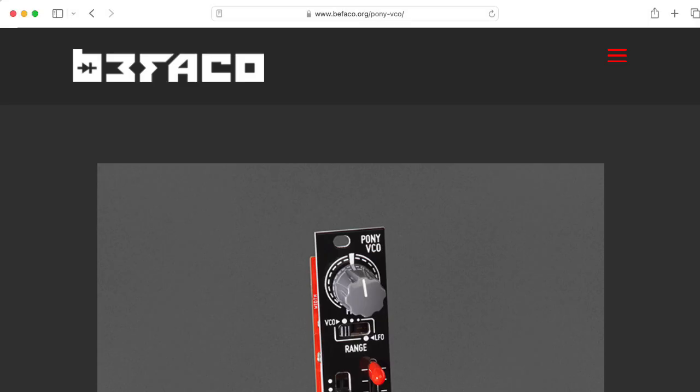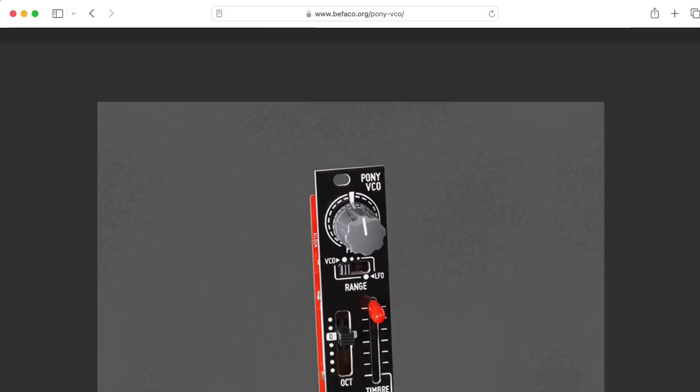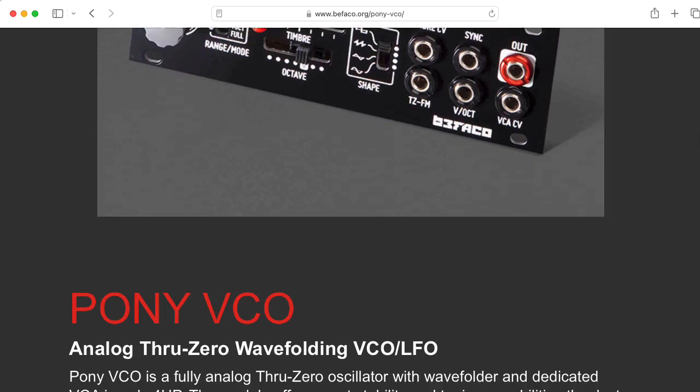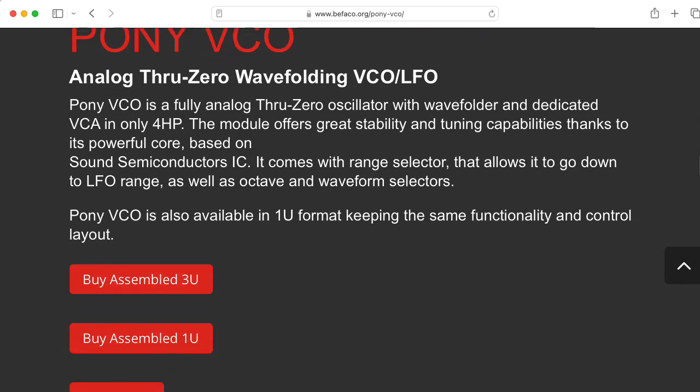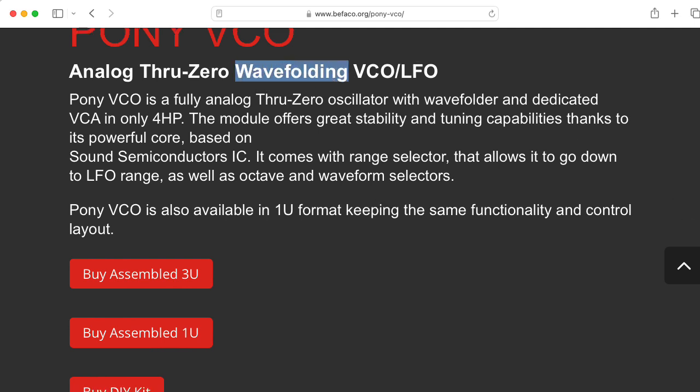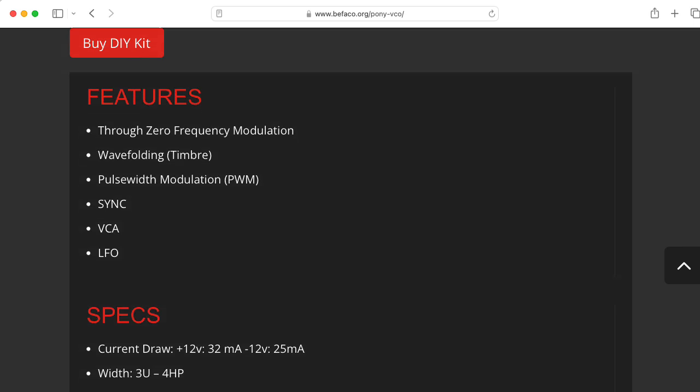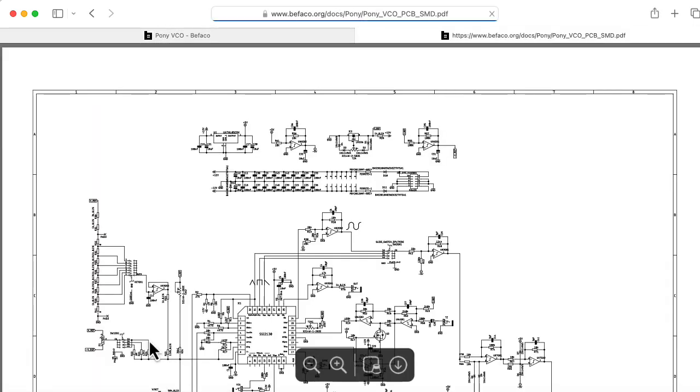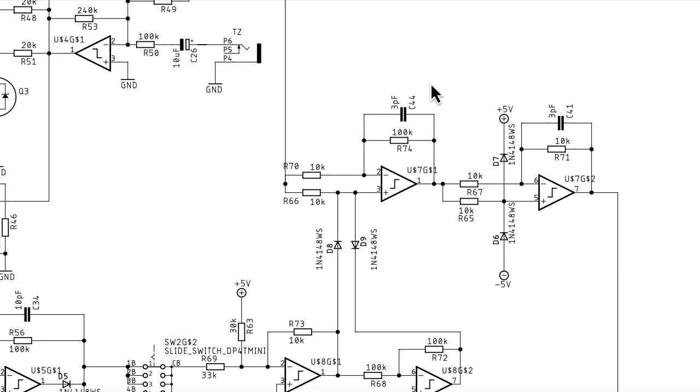I learned that the Bufaco Pony VCO uses the SSI 2130, and something that caught my eye when looking over the website is that the Pony contains a wave folder, and that's actually the main topic of this video because the web page includes the schematics. If we take a look at the wave folder in the Pony, you'll see it has two wave folding stages in series.